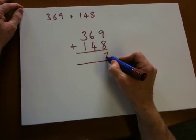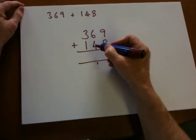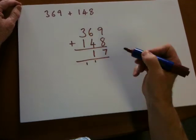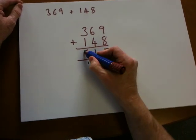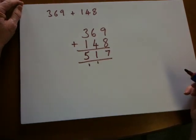we're very likely to do this. 9 add 8, 17. 6 add 4 is 10, one more makes 11. 3 add 1 is 4, one more makes 5. Final answer 517.